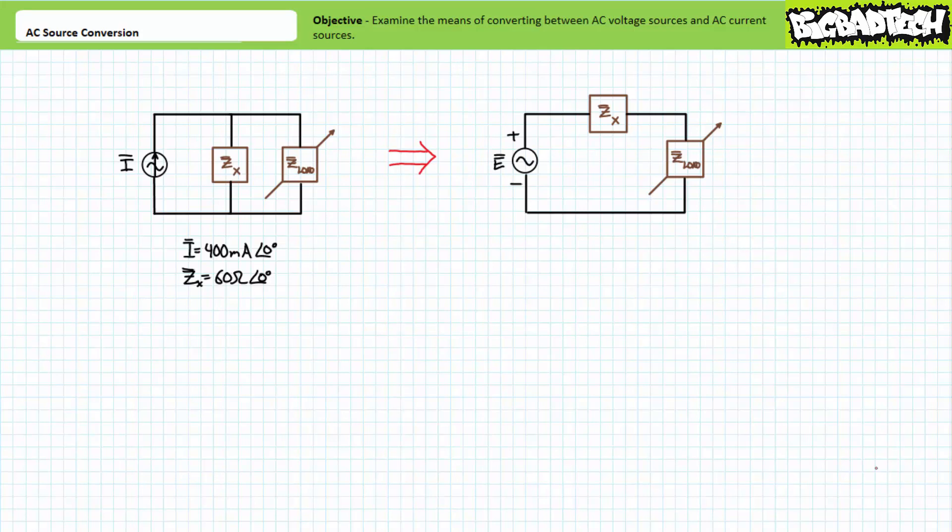We should be able to swap out this parallel combination for an equivalent AC voltage source in series with a fixed impedance, and the variable load should be none the wiser to the substitution. We need to solve for two properties: one, the phasor equivalent voltage, and two, the impedance value for the alternate source configuration.